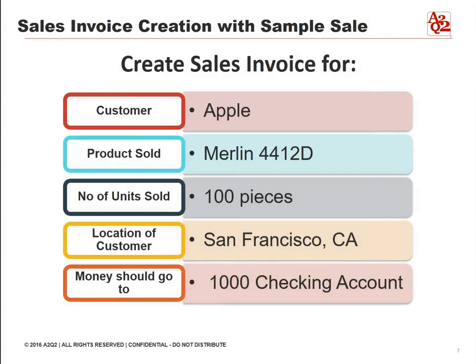Let's create a sales invoice for Apple as the customer with the following details: the product sold is Merlin 4412D, the number of units sold is 100 pieces, the location of the customer is San Francisco, California, and the account is the 1000 checking account.